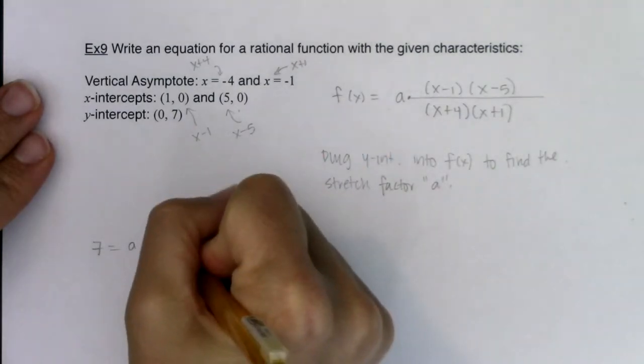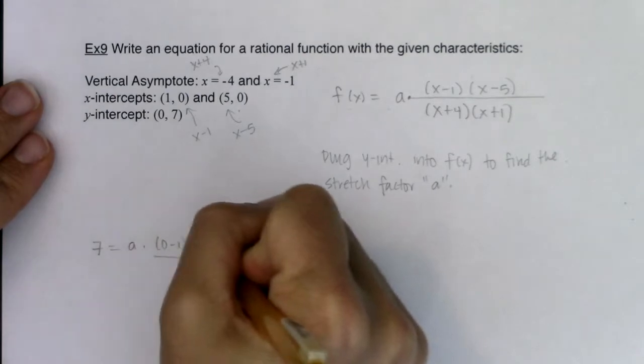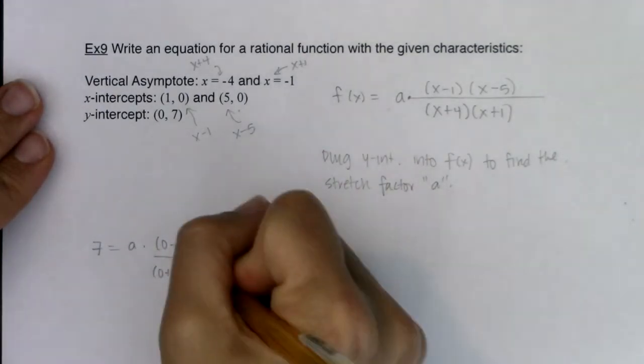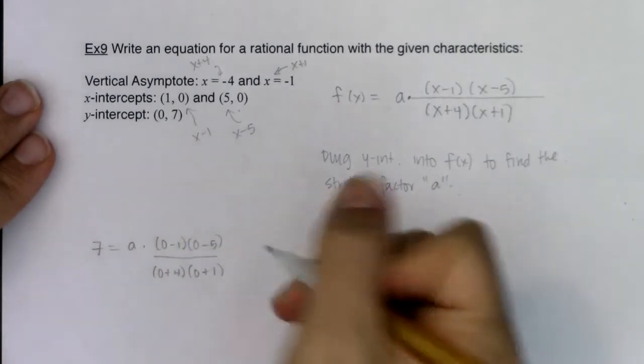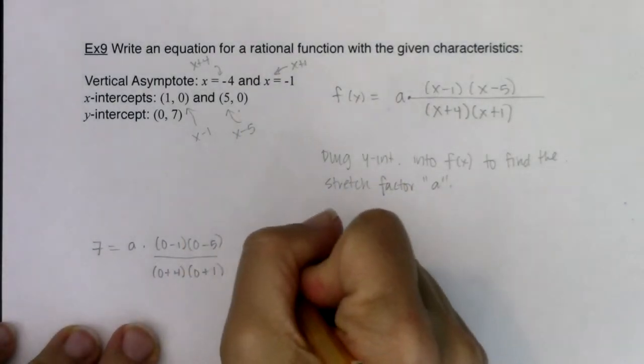0 minus 1, 0 minus 5, wait for it, 0 plus 4, and 0 plus 1. All right, so I've got my stretch factor, I've got my equation started.